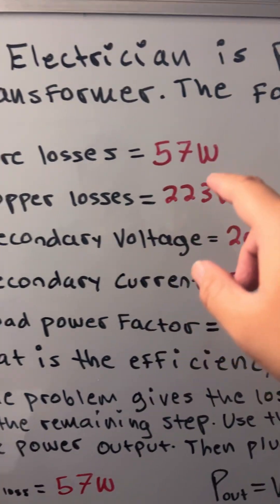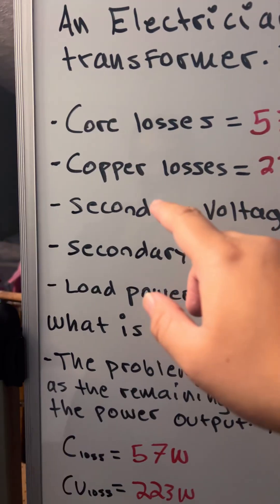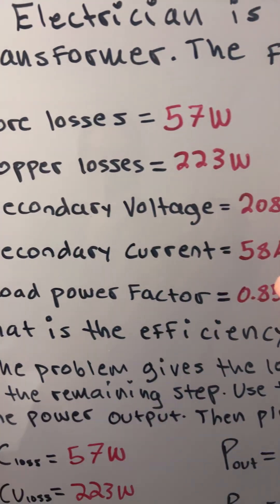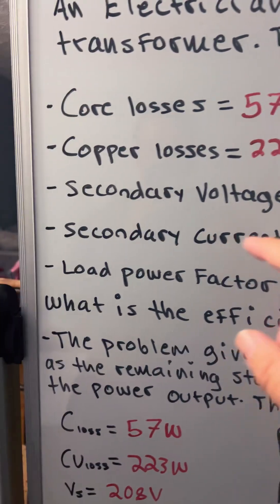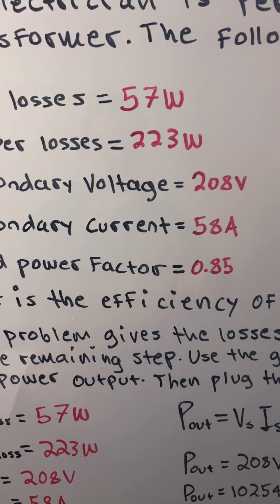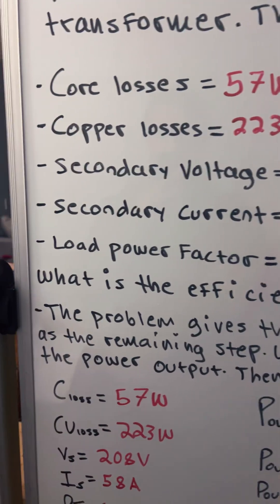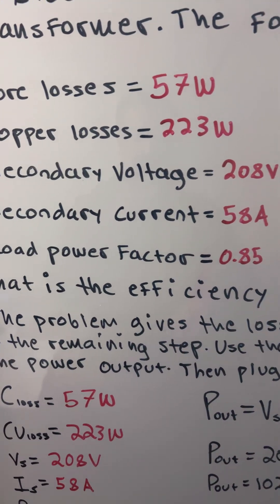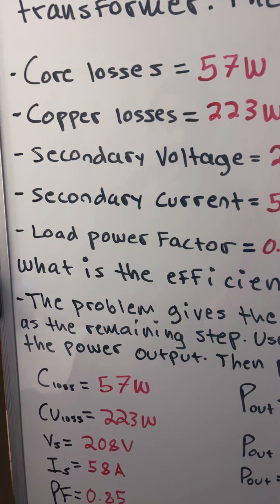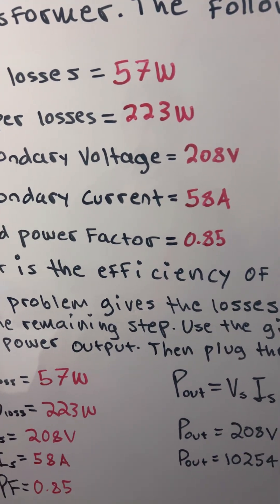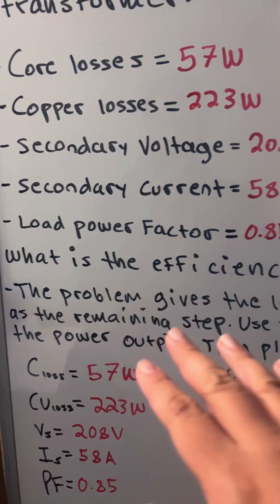We have core losses = 57W, copper losses = 223W, secondary voltage = 208V, secondary current = 58A, and load power factor = 0.85. What is the efficiency of the transformer?